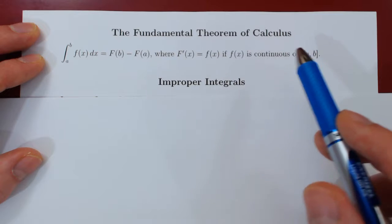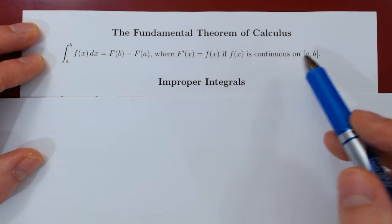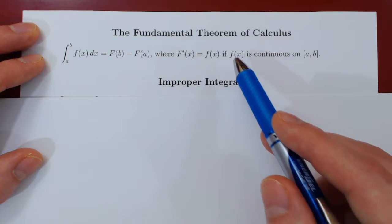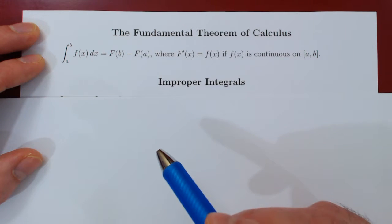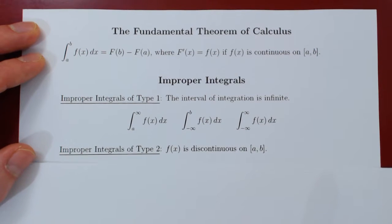And because there are two types, there are two conditions, right? The first is that the bounds are finite, the second that f is continuous on the interval of integration. There are therefore correspondingly two types of improper integrals, type one and type two.